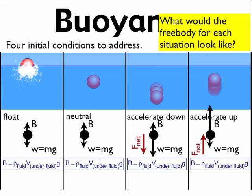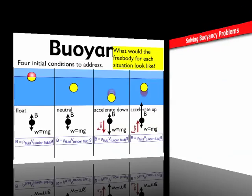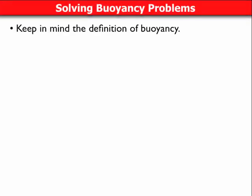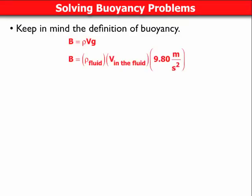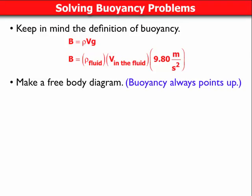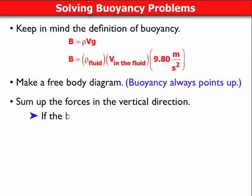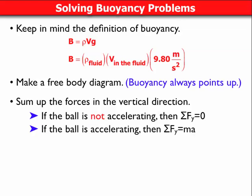The buoyant force calculation is the same regardless of which free-body diagram you use. What differs is how you calculate the volume — the volume that's under the fluid. For a floating object, it's just the small submerged shape. For fully submerged objects, it's the entire shape. Solve using the free-body diagram: if the object is not accelerating, the sum of forces equals zero. If it's accelerating, the sum of forces in the y direction equals the net force, or ma, which equals the other forces in the free-body diagram. Keep in mind: B equals rho times V times g, buoyancy always points up.